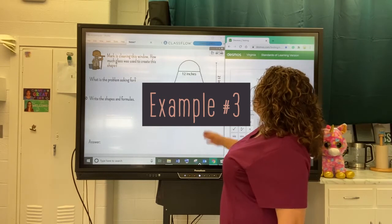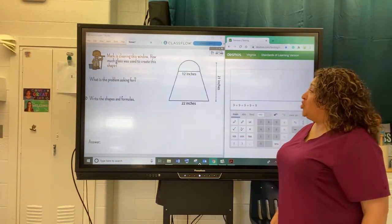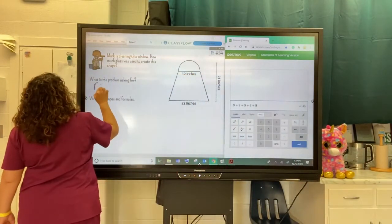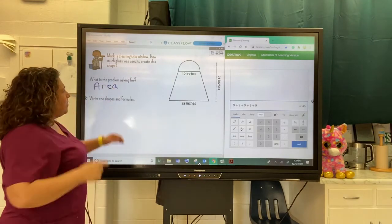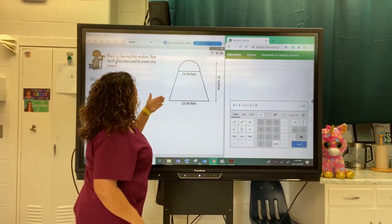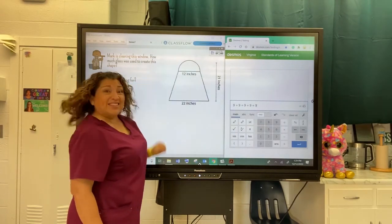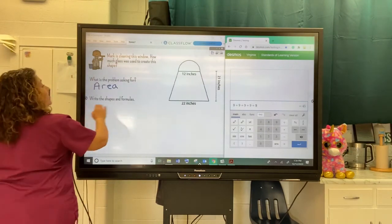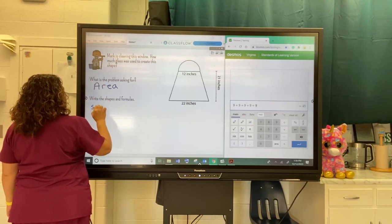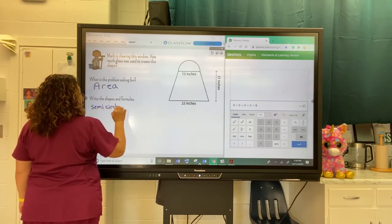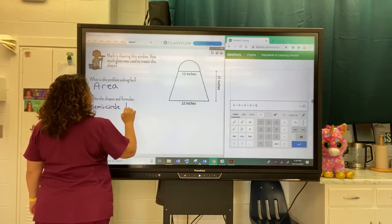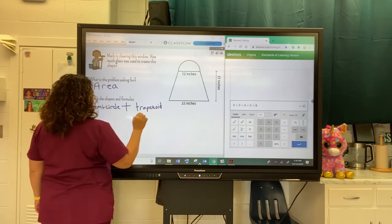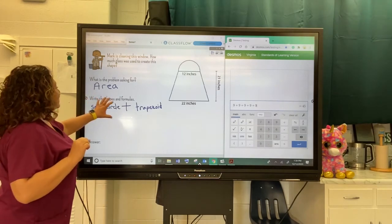It says Mark is cleaning this window. How much glass was used to create the shape? So they're talking about how much glass, so I think we're looking for area here. Oh my goodness, this one's going to be kind of crazy because I think if you look at it, I see a trapezoid and a semicircle. Let's just start by writing things down. We know we're looking for area. And it says write the shapes in the formulas. So I'm gonna write semicircle, okay, plus a trapezoid.